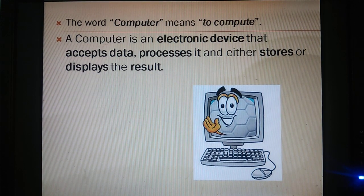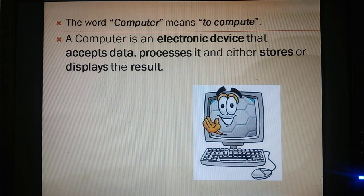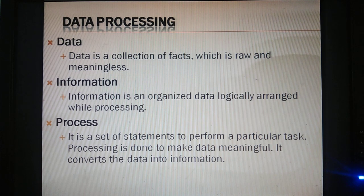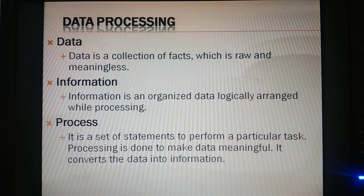The word computer means to compute — to store and process data and give a result. Data is our raw material, which is meaningless on its own. What is information? Information is the result after processing. Processing is a set of statements performed on a particular task. After processing, whatever data you have input will be shown in a meaningful manner, which is changed into information.